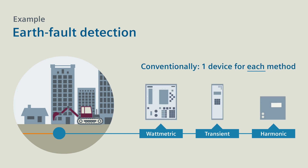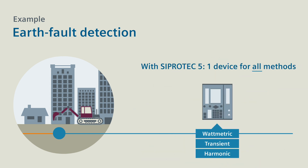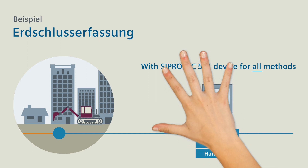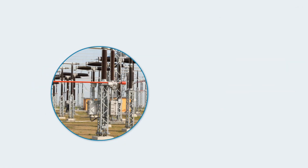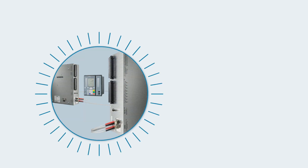Solved efficiently, use just one CProtek 5 device, because it enables earth fault detection using all three methods. So that you can really cover all tasks, CProtek 5 offers 360-degree solutions for all challenges.